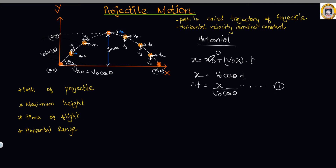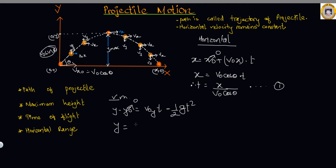Similarly, for vertical motion, we have y minus y-naught equals v-naught-y times t minus one-half g t-squared. Since we start from the origin, y-naught is zero, so y equals v-naught-y times t minus one-half g t-squared. The value of v-naught-y is v-naught sine theta, so y equals v-naught sine theta times t minus one-half g t-squared.